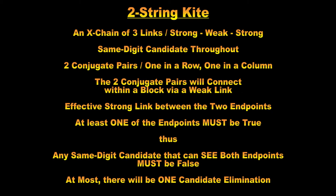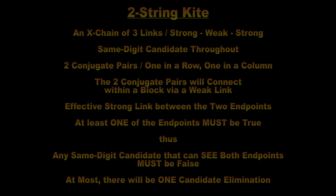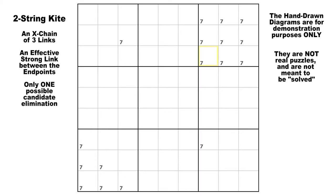Thus, any same digit candidate that can see both endpoints of the chain must be false. And with any two-string kite, at most there will be only one candidate elimination. Now remember, these hand-drawn diagrams are not real puzzles. They are for demonstration purposes only, so please try to focus only on the particular point that I am trying to make.